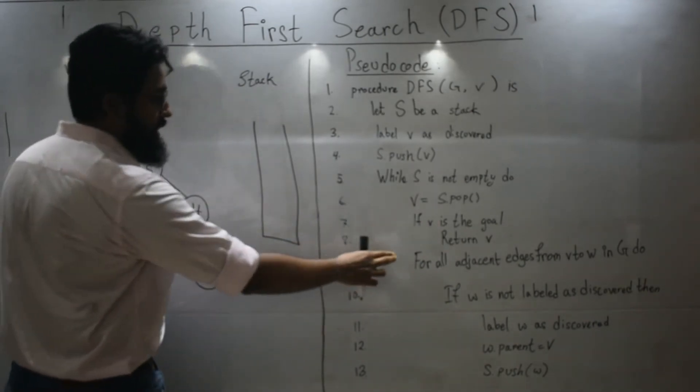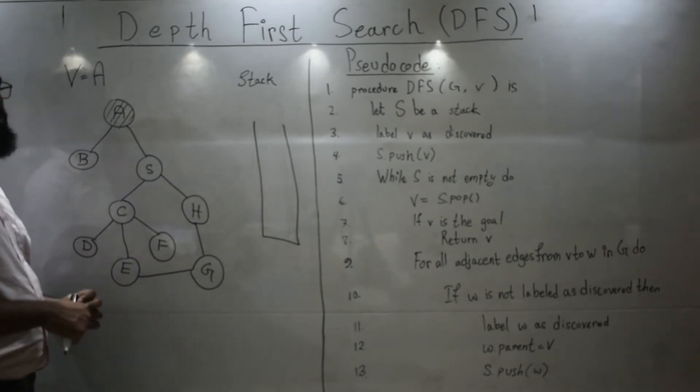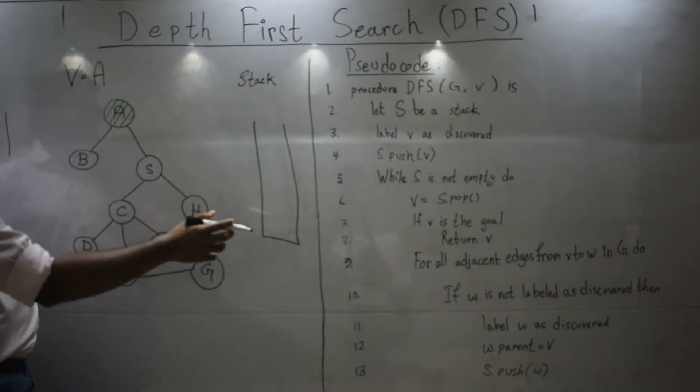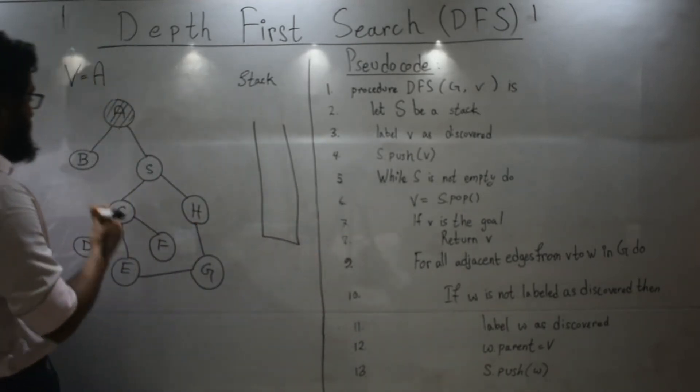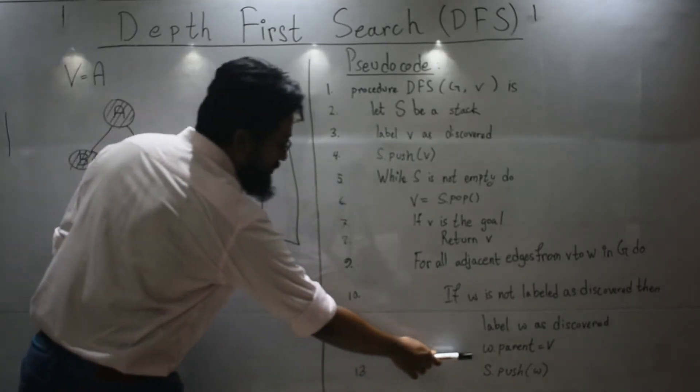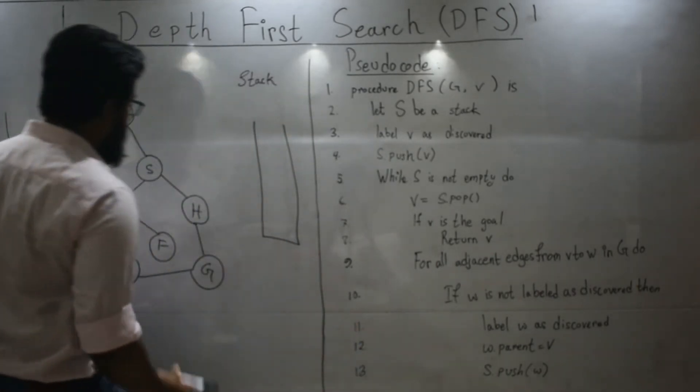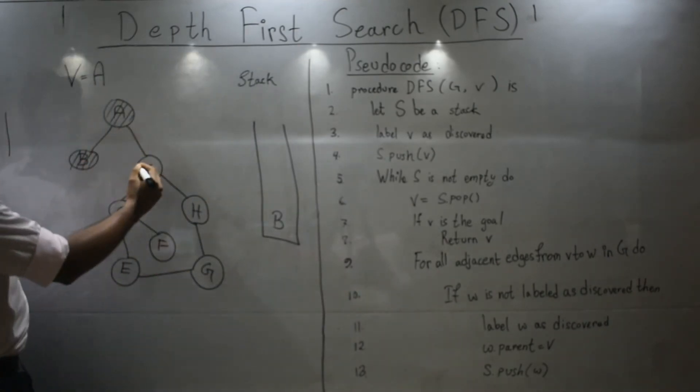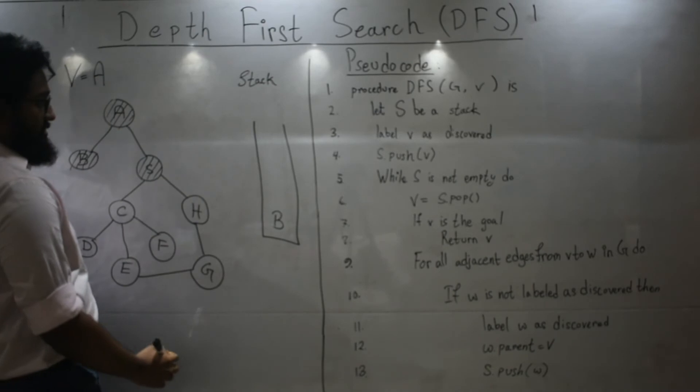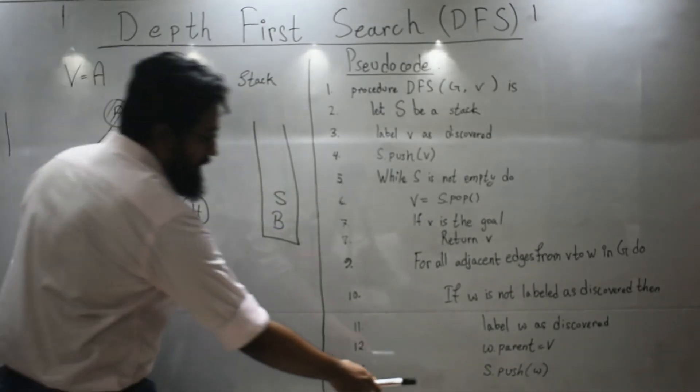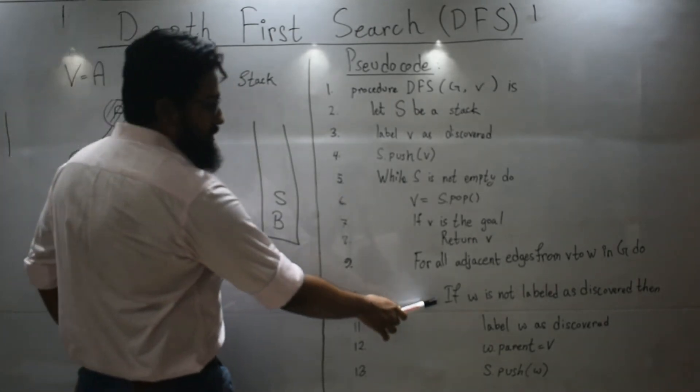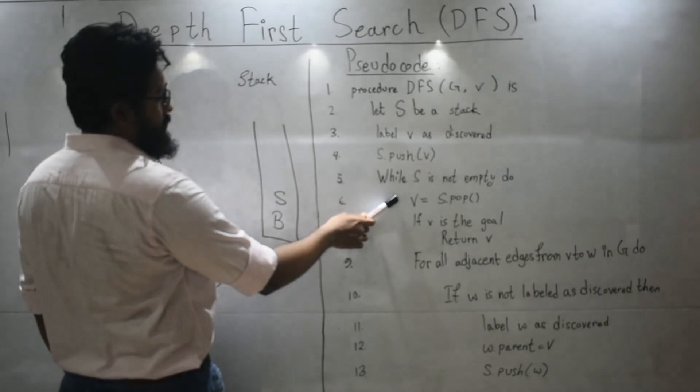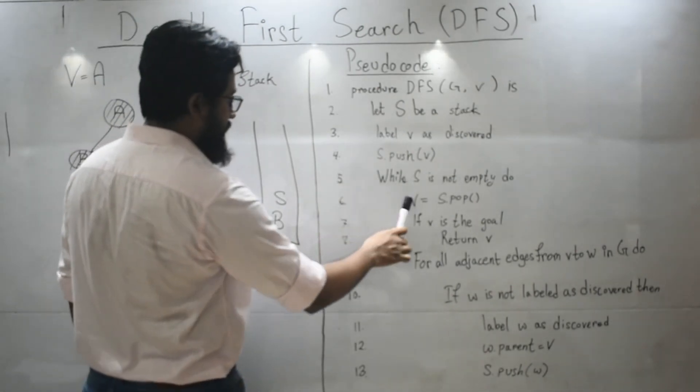Let's follow the next line. For all adjacent edges from W to V - adjacent edges - these two are the adjacent edges. If it's not labeled as visited or discovered, let's label them. And then let's push. Push B. And then again follow the loop. Label S as discovered and push. After that there are no more edges which are not discovered. All of them has been discovered. So this loop will exit and your cursor will come back to this line number six.